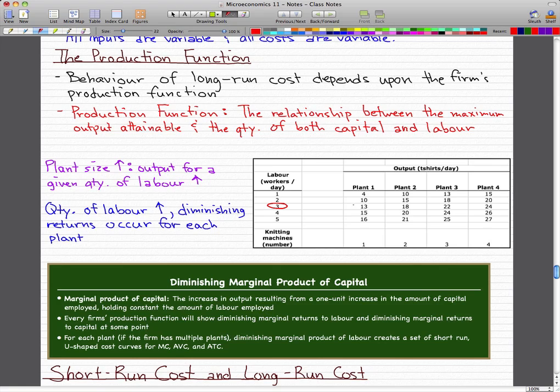we can make a total of 13 t-shirts per day. At plant two, we have two knitting machines. And with three workers, we can make 18 t-shirts per day. And at plant three, we have three knitting machines with three workers. We can make 22.